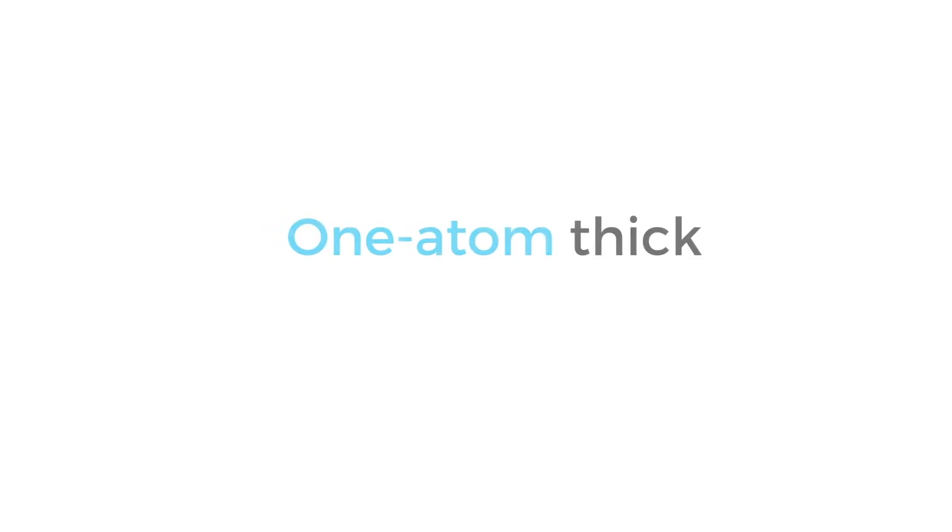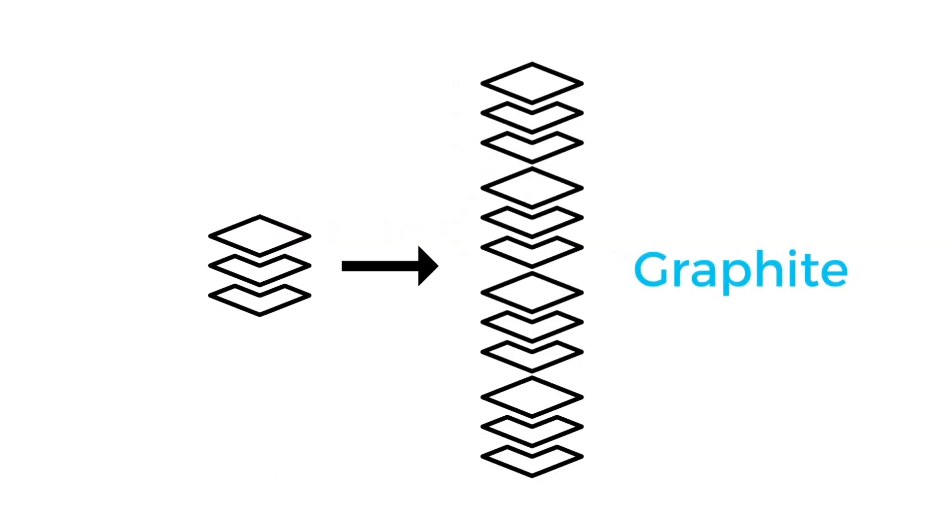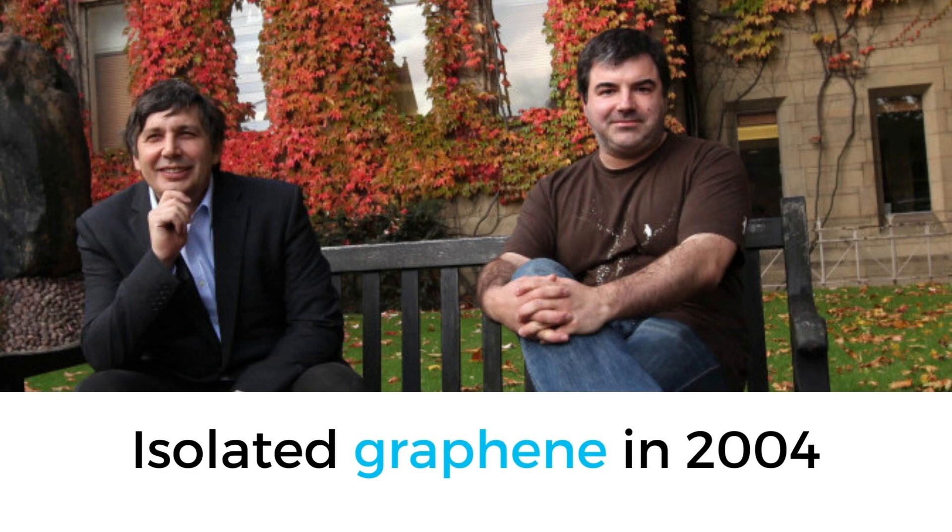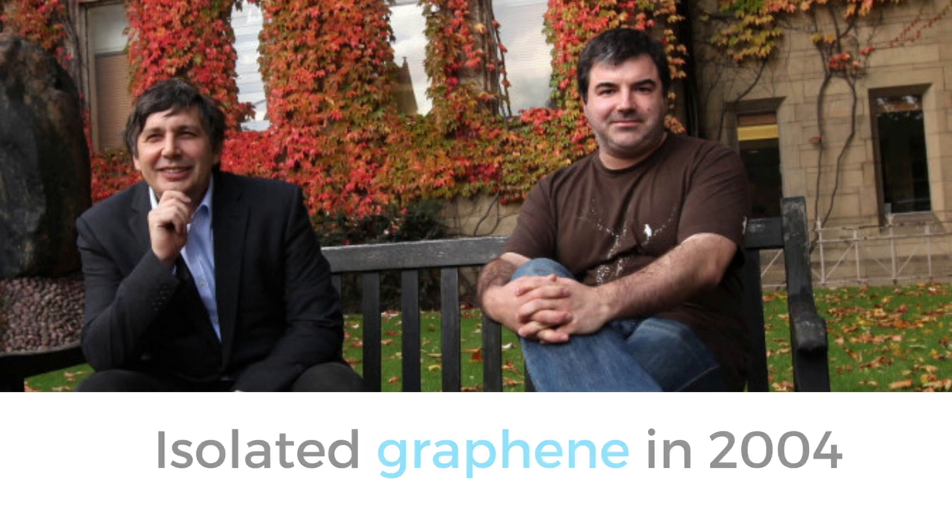Graphene is basically one atom thick carbon. If you keep stacking several hundreds of graphene layers on top of each other, you will eventually get graphite.